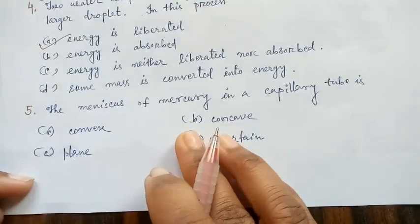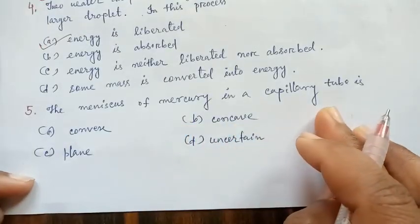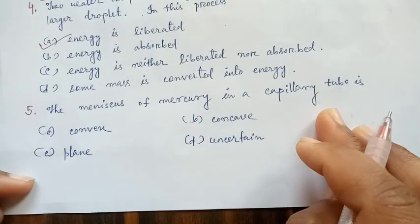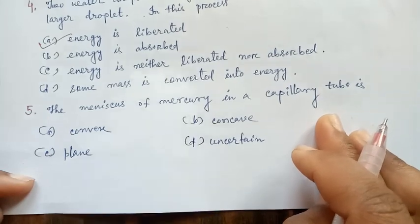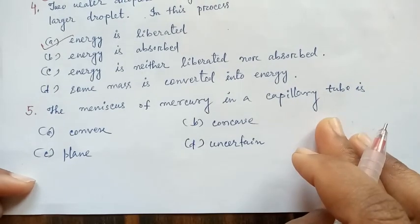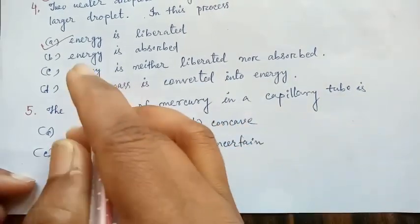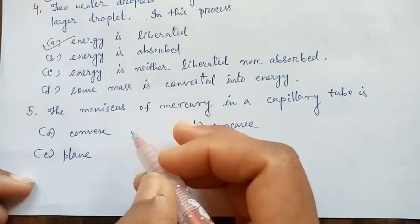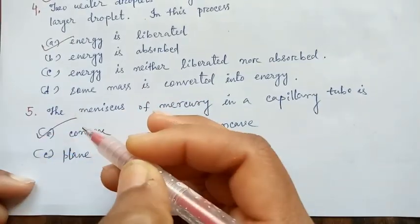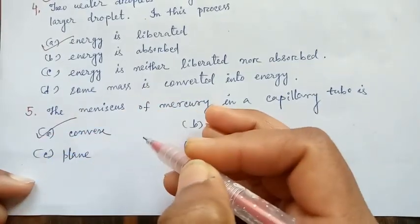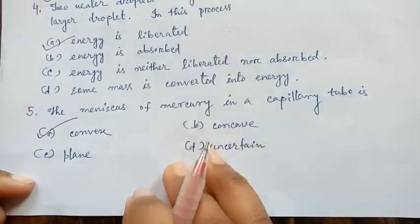The meniscus of mercury in a capillary tube is: convex, concave, plane, or uncertain. It is convex because the angle of contact of mercury and glass is an obtuse angle, that is, greater than 90 degrees.